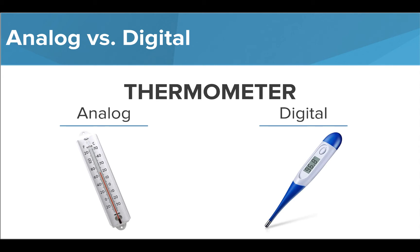A digital thermometer, on the other hand, has a discrete number of values that can be displayed on the digital screen. Though there are still many values that can be shown, we can understand from the image shown that though 96.8 can be displayed, a temperature of 96.82 or 96.87 could not.